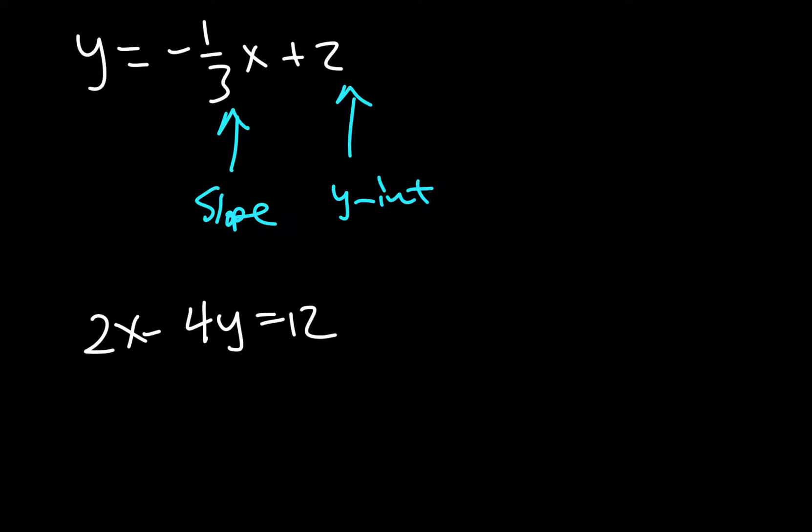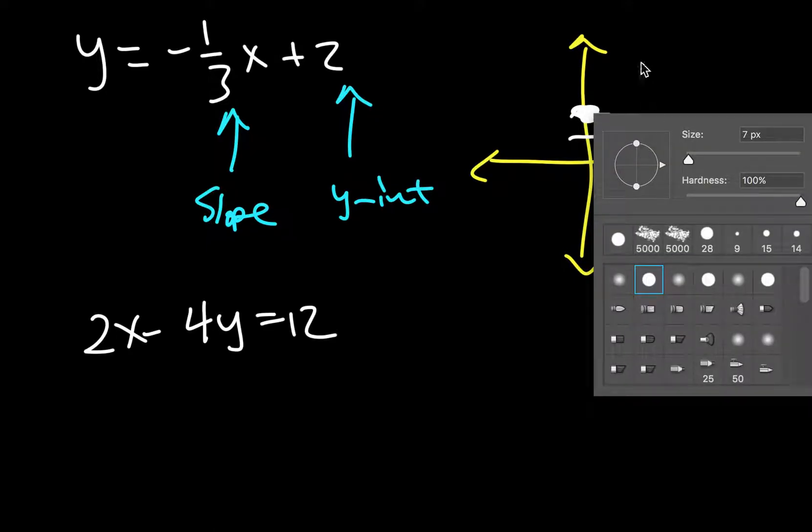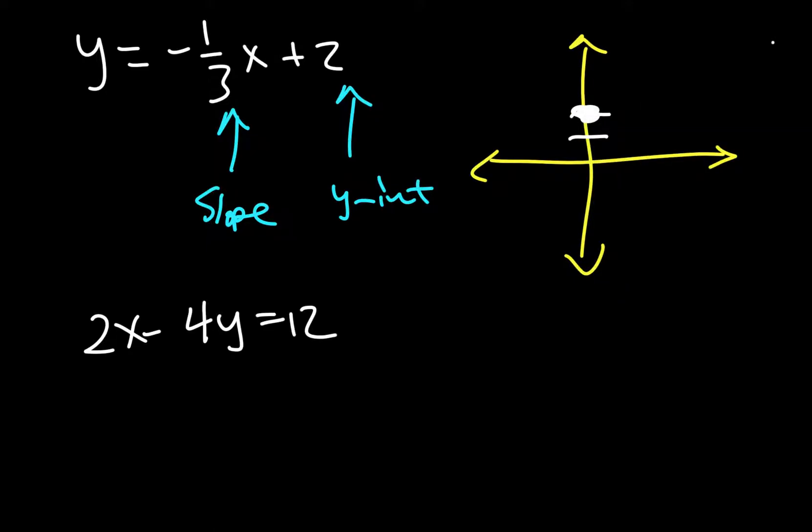And so over here we draw an axis and we start at the y-intercept, so we go up to draw a dot on the y-axis. I don't know why that popped up. And then we use the slope which is rise over run.